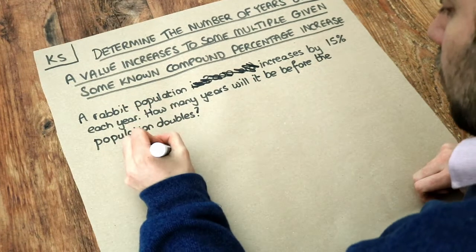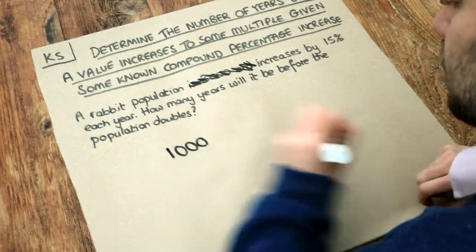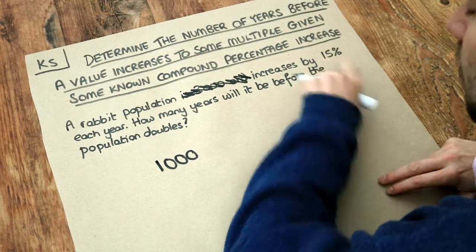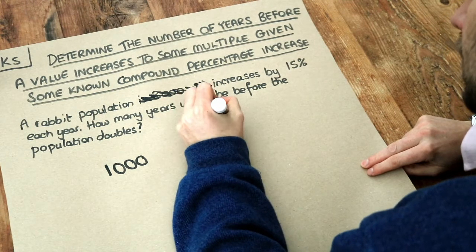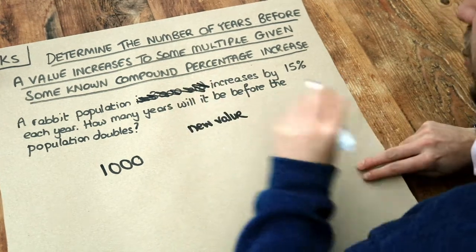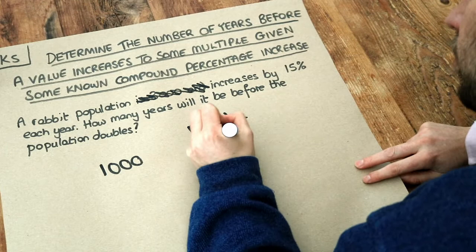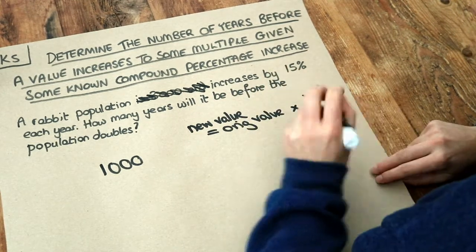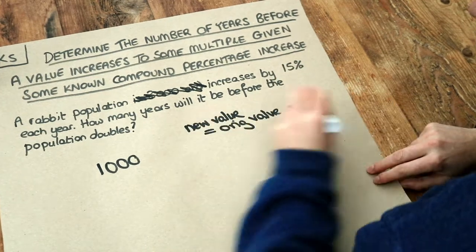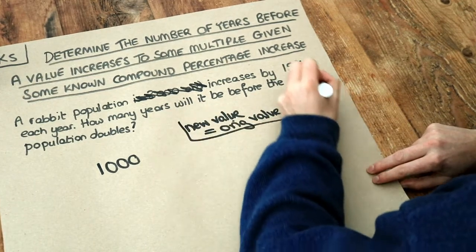So let's just say that the rabbit population is 1,000 and we're increasing by 15% each year. Now do you remember we could use this formula that the new value, and this is the formula for compound changes, the new value is equal to the original value multiplied by the decimal multiplier, I'll explain that in a second, to the power of how many years there are. So that's the formula we're going to use.